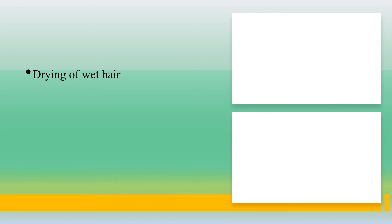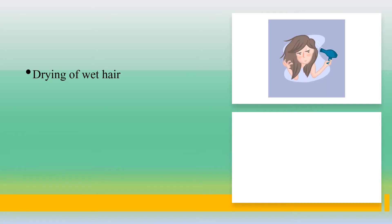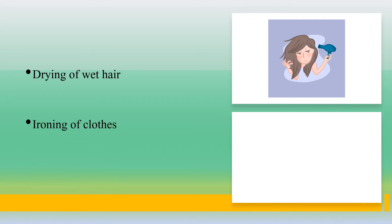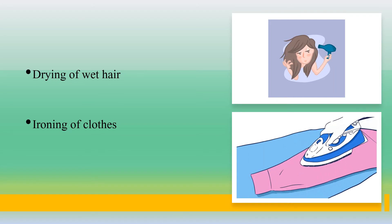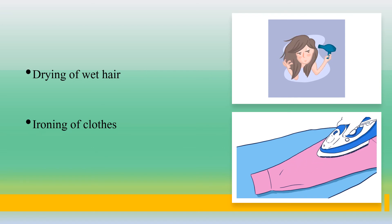Other examples of evaporation include drying of wet hair. Hair dries up on its own after washing as water gets evaporated due to the heat of the sun or the heat of the hair dryer. Another example is ironing of clothes — clothes get ironed well when the hot press evaporates water vapour trapped in the fabric and relieves creases.